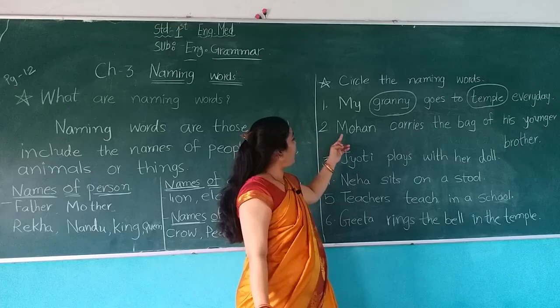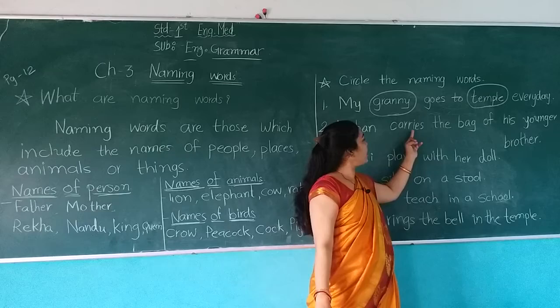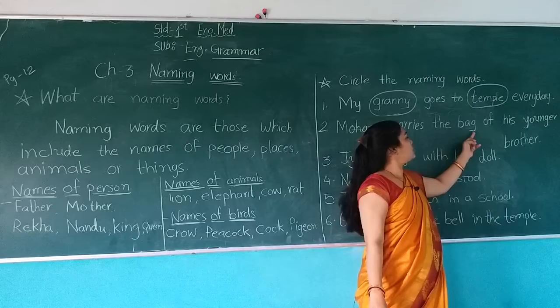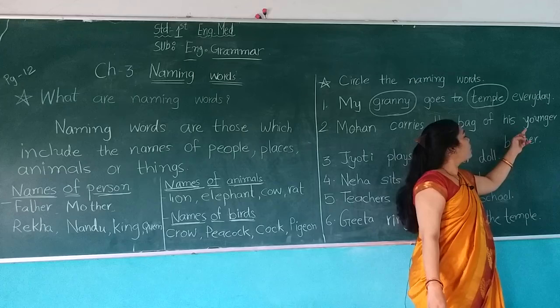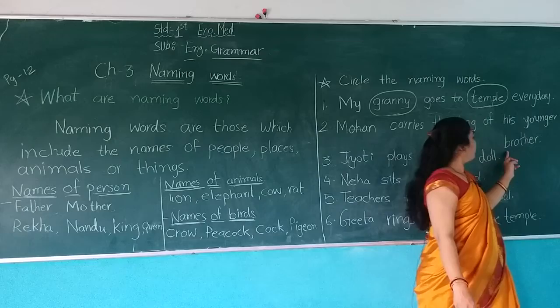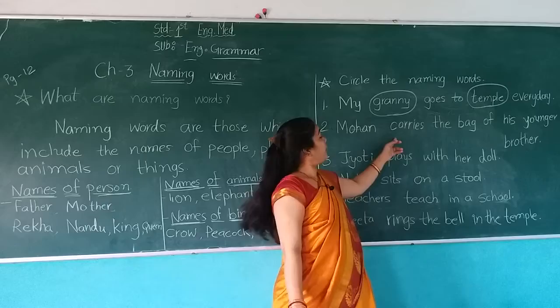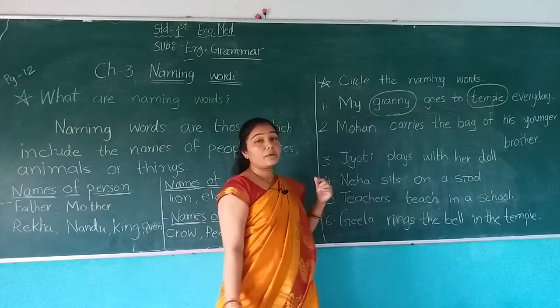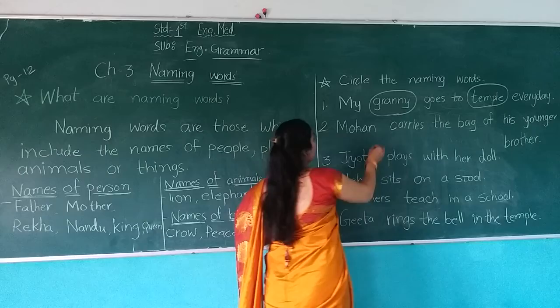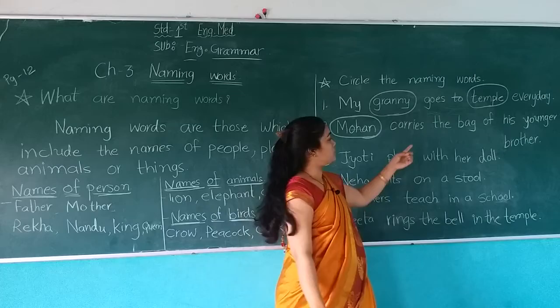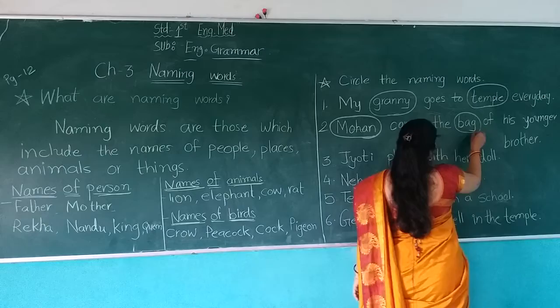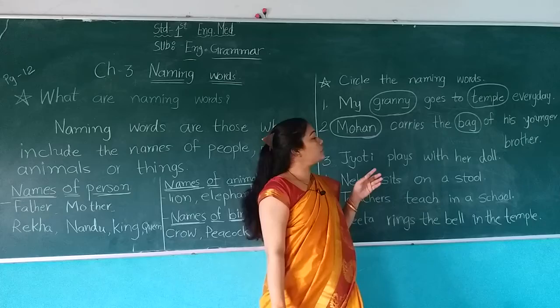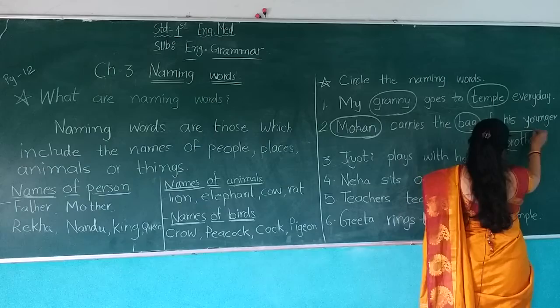Number 2: Mohan carries the bag of his younger brother. Now which names are here? Mohan is a name of a person, so we will do a circle on Mohan. Bag is a name of a thing, so do a circle on bag. And brother is also a name of a person, so do a circle on brother.